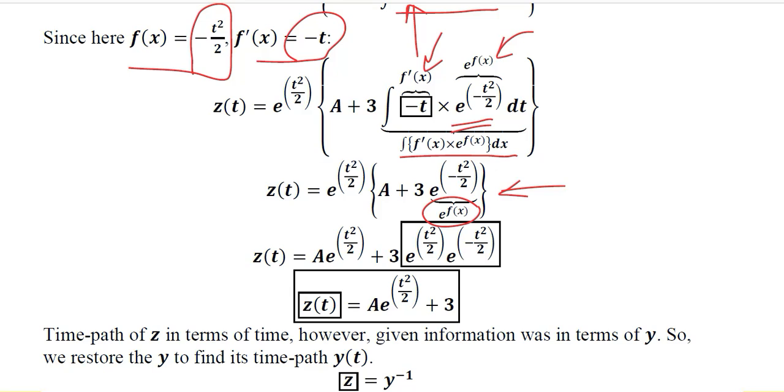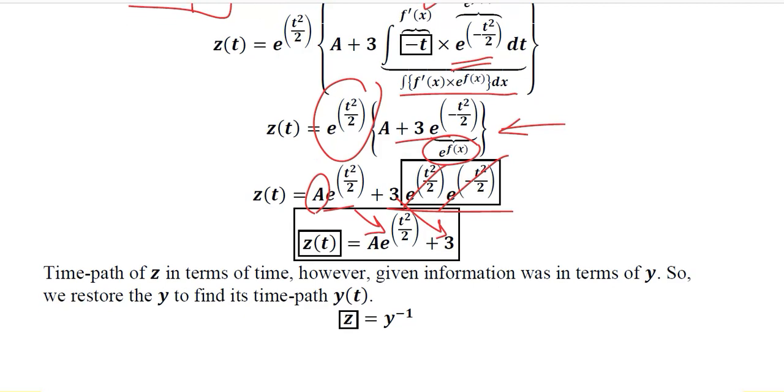Instead of the right hand side, we will write the left hand side, which is the formula that we use in the integral of the exponential functions. This is the outcome of it. Now we can rearrange it, because this e exponent t square over 2 is getting multiplied with A and with this term. When we multiply it with A, it becomes this, and when we multiply it with 3 exponent this, it becomes this. We have this final form in which 3 is left here, and this term is as it is, because these two terms got cancelled out.